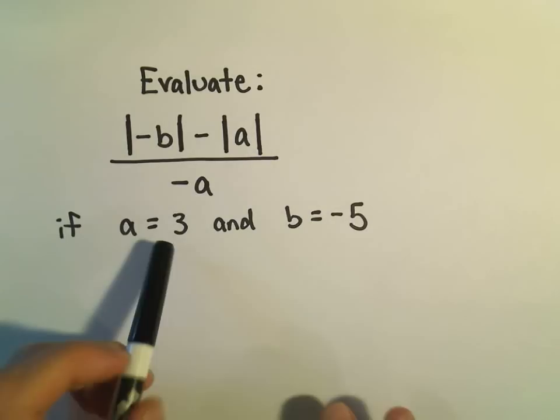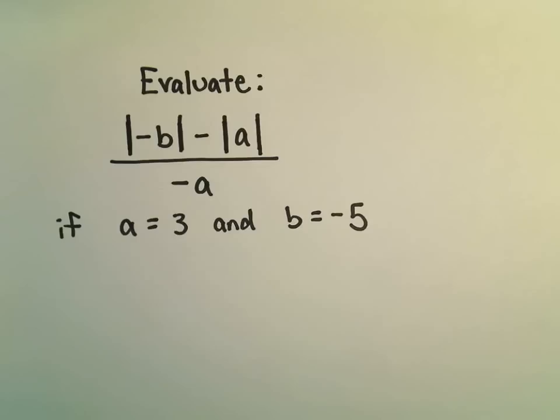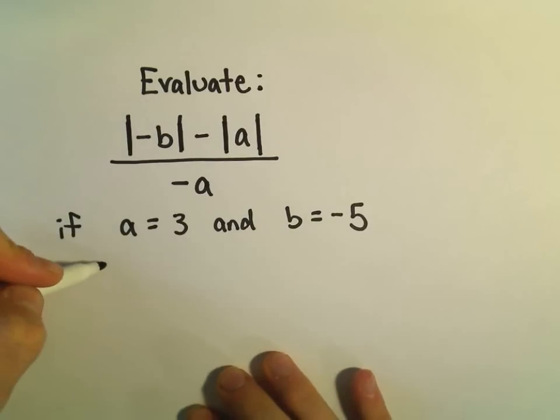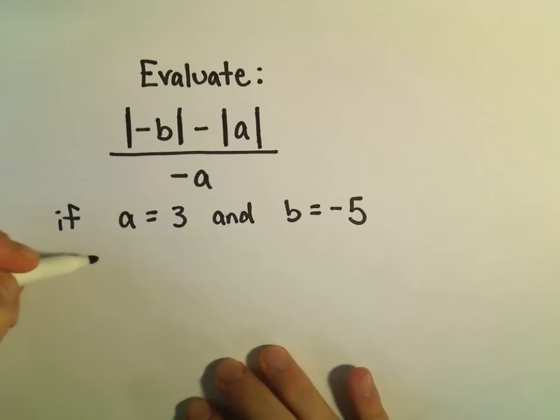And we want to do this when a equals 3 and b equals negative 5. So alright, let's just basically fill everything in and hopefully simplify it down.